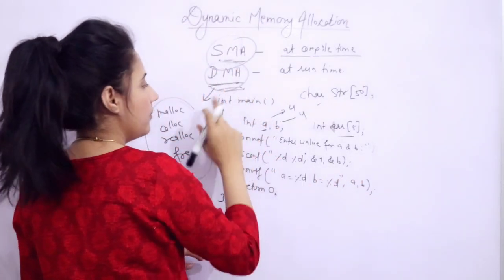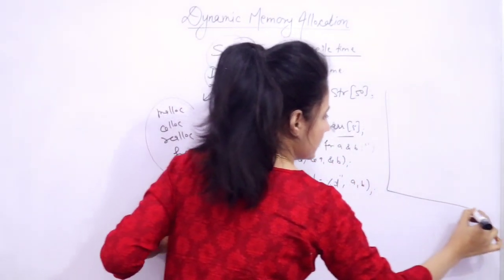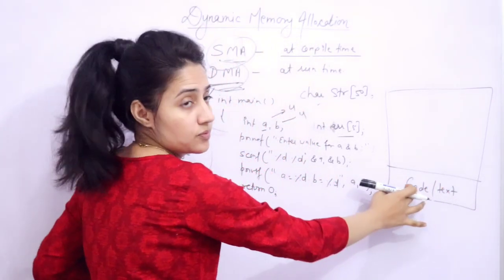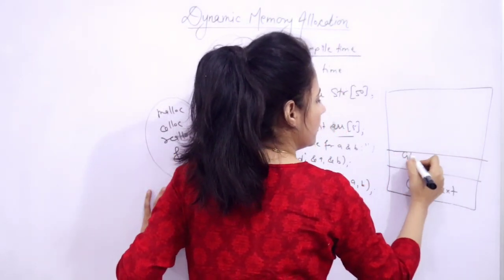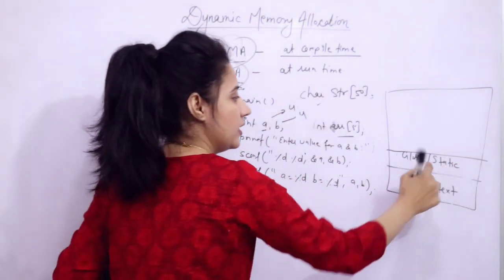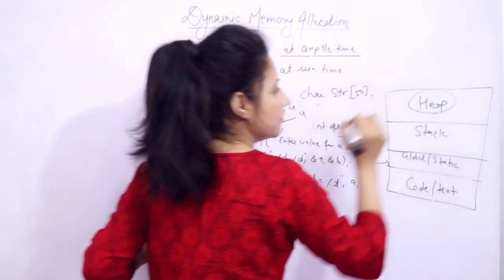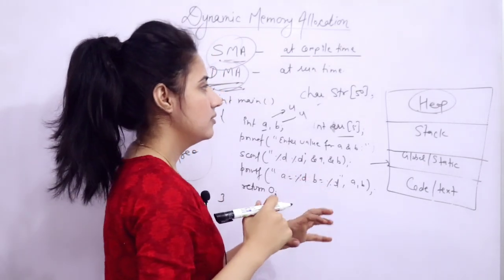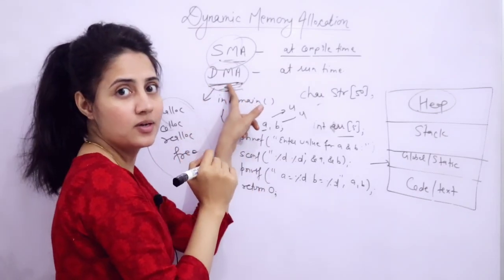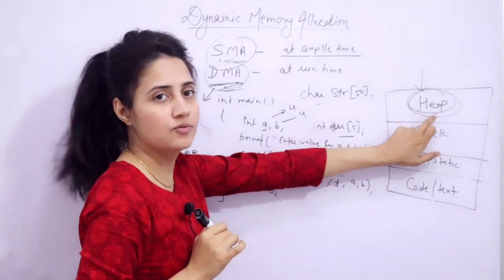You must have some idea about the memory layout — how memory would be allocated to your program, in how many segments. Basically, four segments are there. One is for code or text instructions. One memory section is for global variables or static variables — they will take memory from this section. One is the stack and one is the heap. The heap is like a big free pool of memory. Whenever you allocate memory dynamically, the memory would be allocated from the heap.